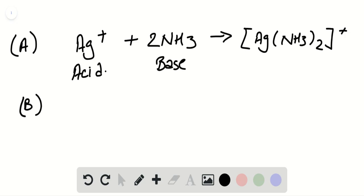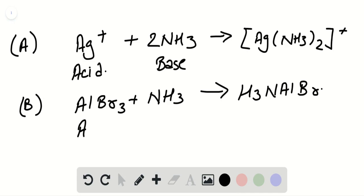Option B, we have AlBr3 will act as a Lewis acid as it readily accepts electron pair from ammonia which is a Lewis base. So ammonia will act as Lewis base.